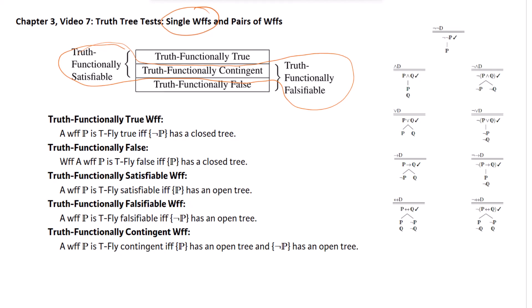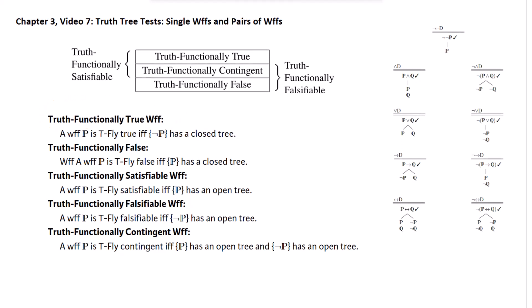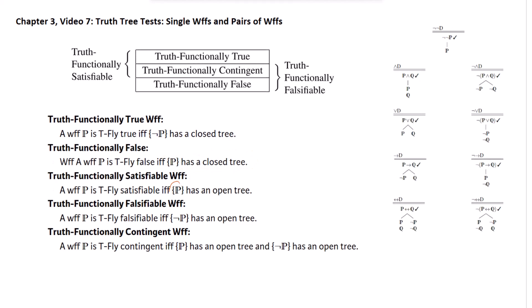The tests for these properties can be a little bit confusing. Suppose a formula is truth functionally true — that means it's true on every truth value assignment, which means its negation is going to be inconsistent. So the set containing just the negation of our candidate formula is going to be inconsistent and have a closed tree, meaning it's truth functionally true. Conversely, if it's truth functionally false, then the formula itself is always false and the set containing just it is going to be inconsistent, having a closed tree. If p is satisfiable and can be made true, then the set containing just the formula itself is consistent and will have an open tree. If it's falsifiable, then the set containing just its negation is consistent and will have an open tree.